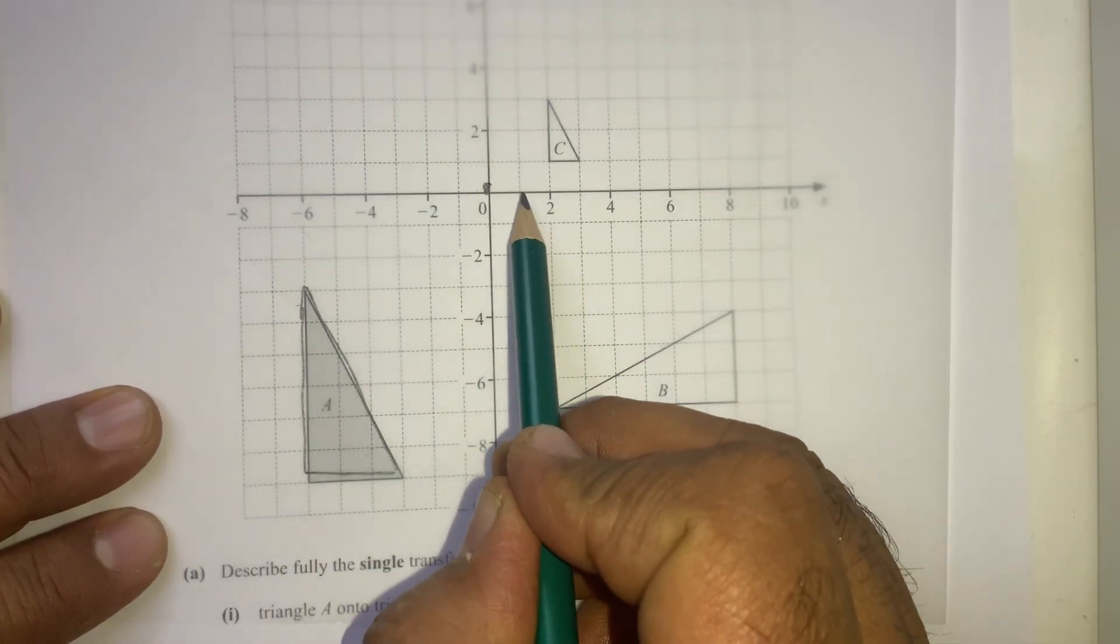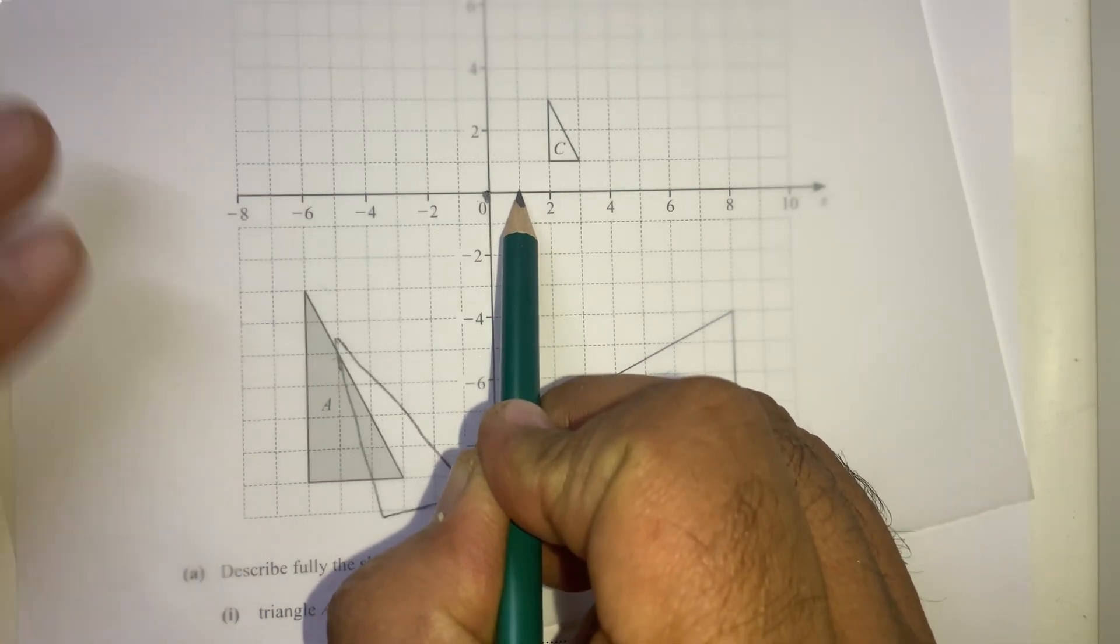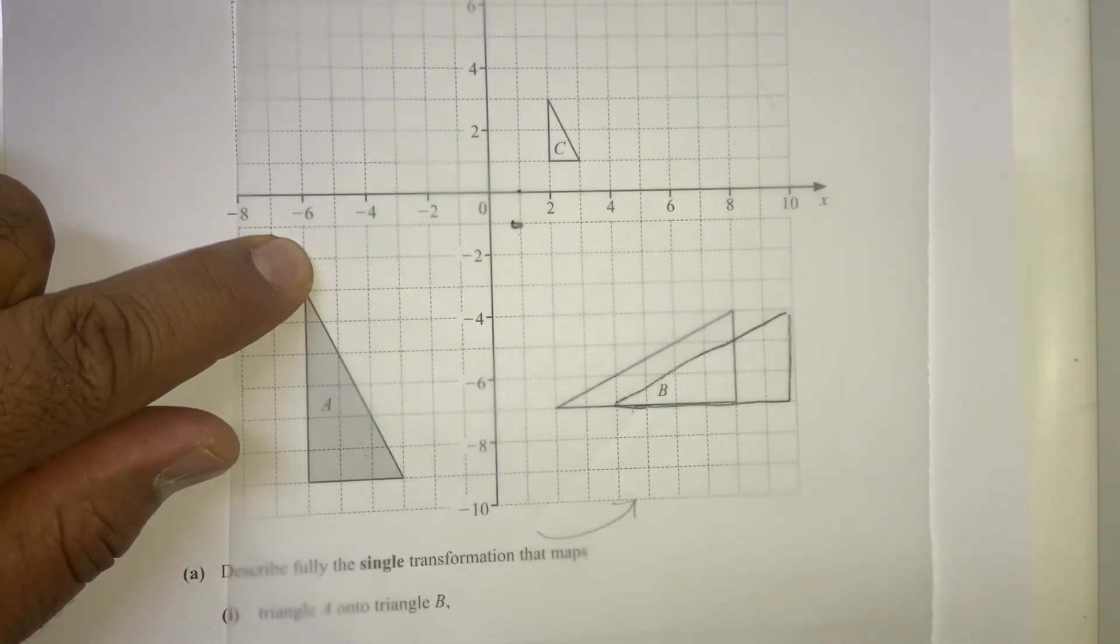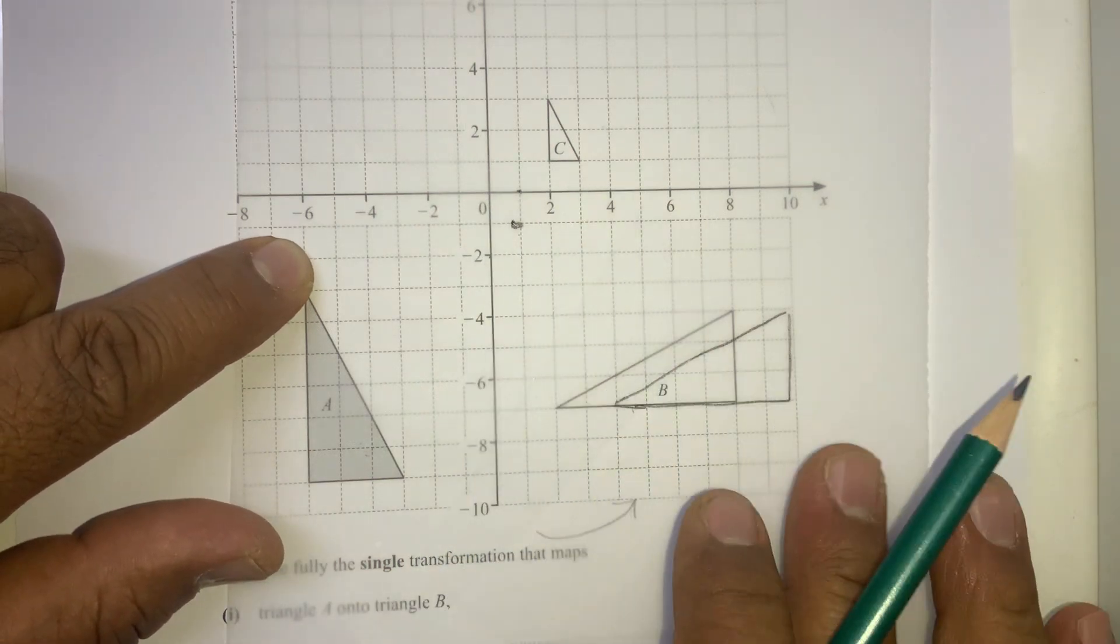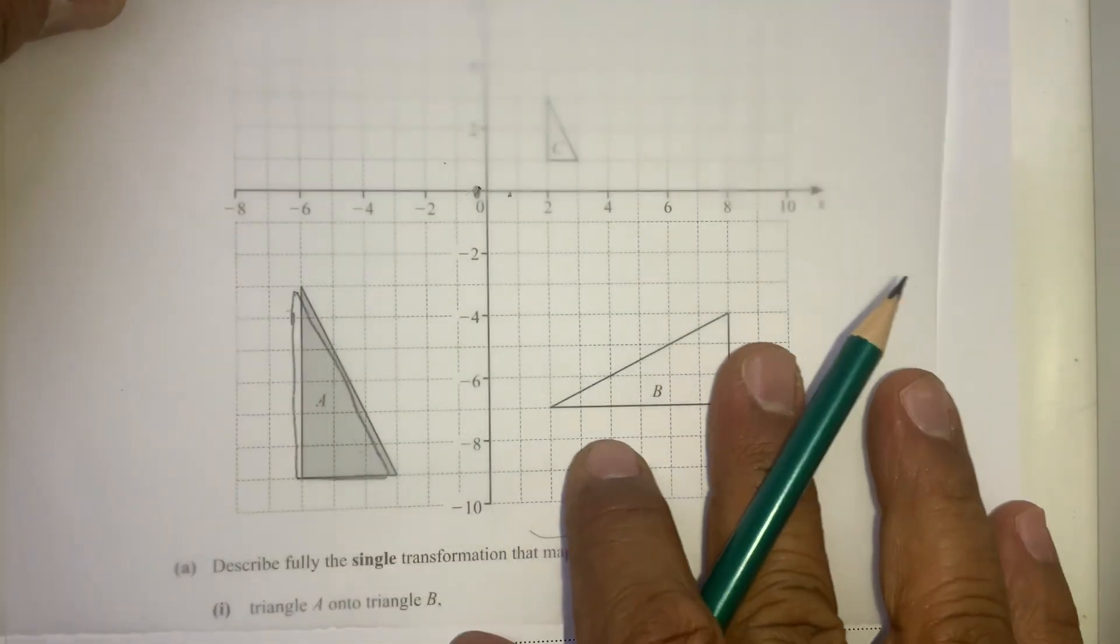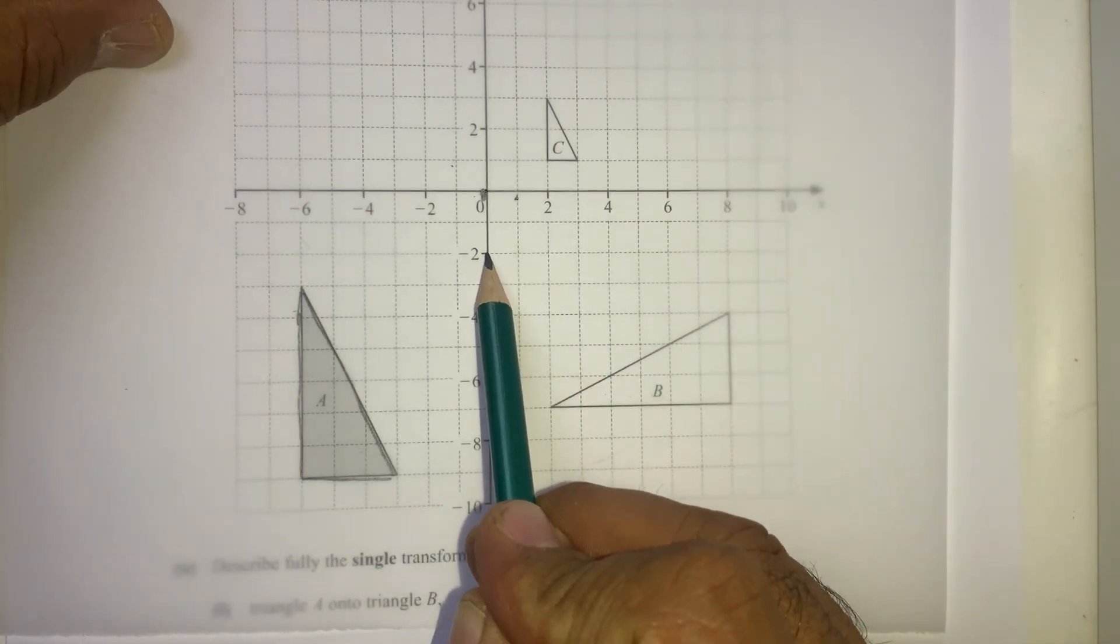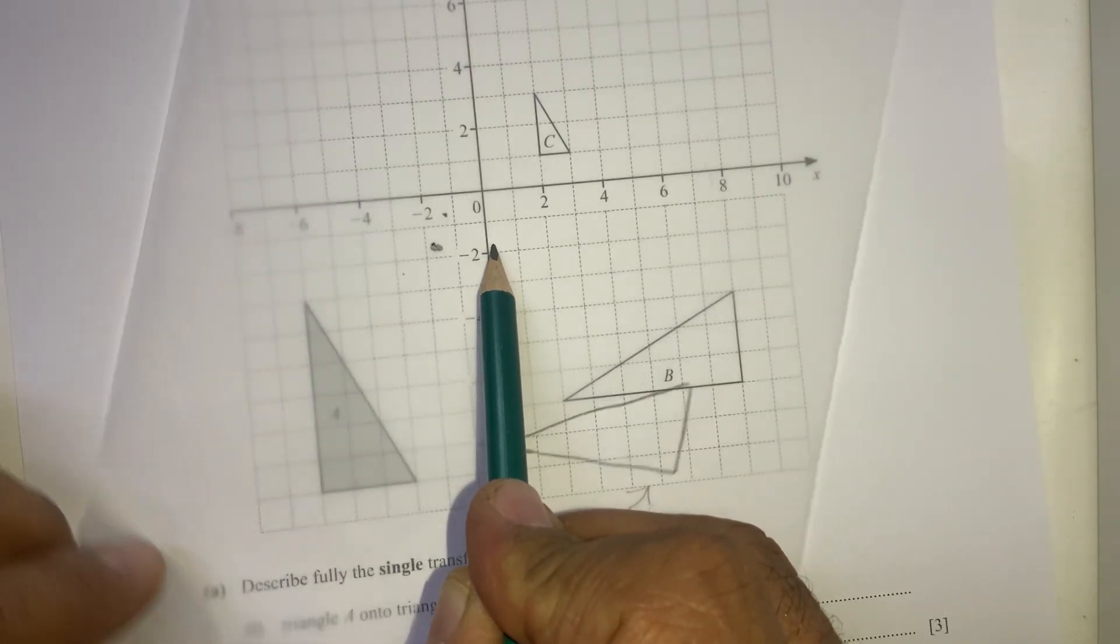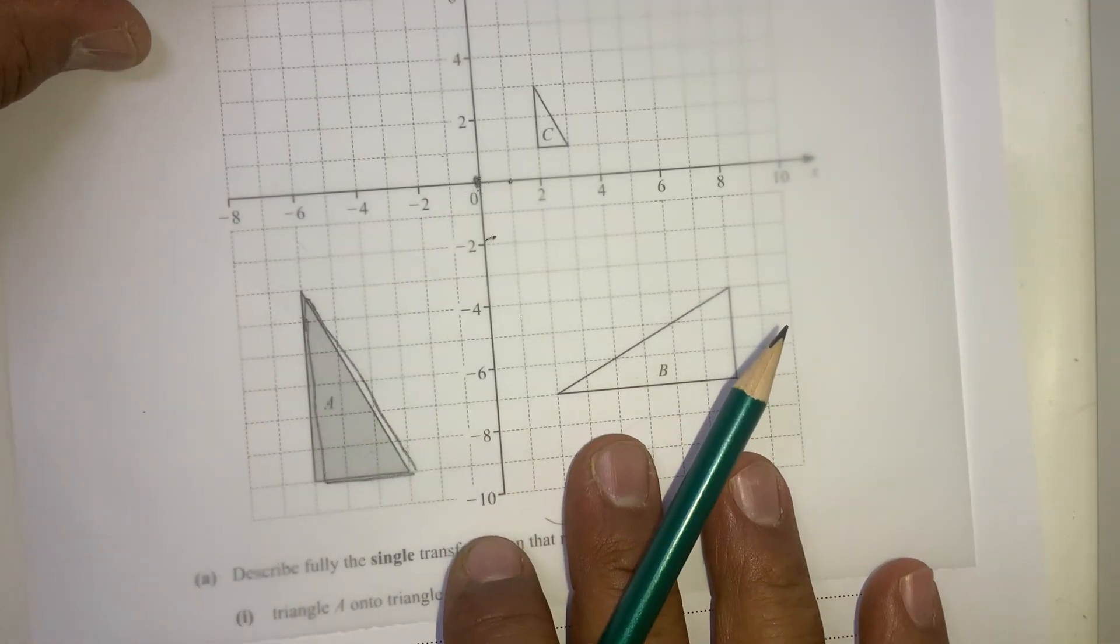It doesn't work. We can try this point 0 negative 2. First go back. You can try this point 0 negative 2. Doesn't work. So it takes time to try different points.